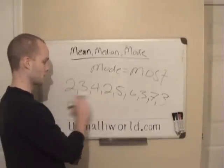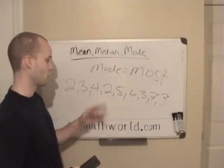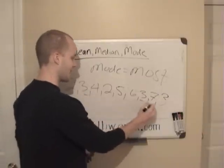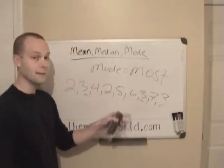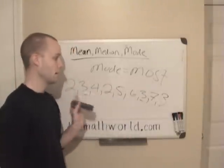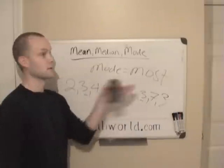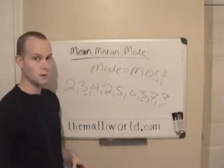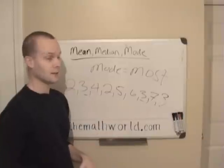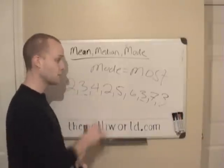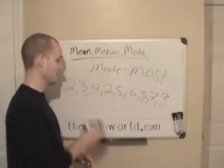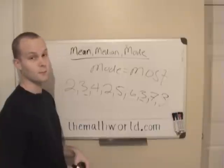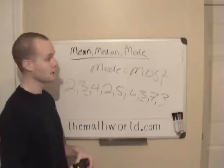2 appears twice, and 4, 5, 6, and 7 each appear once. But 3 appears 3 times. So 3 is the mode of this set of numbers because it appears the most. Mode is very easy to calculate — all you have to do is go through the entire list and see which number shows up more frequently than the others.